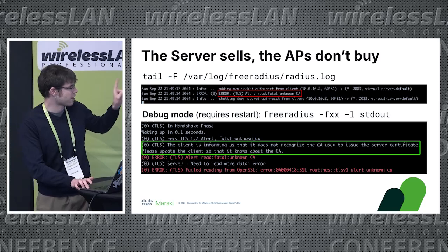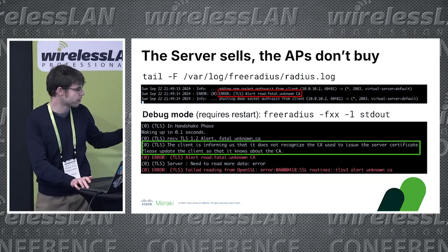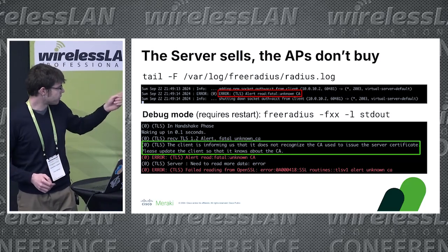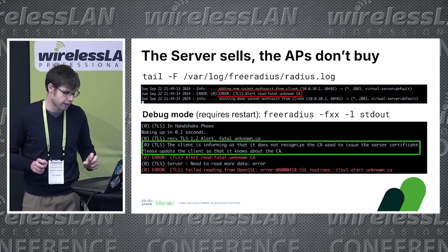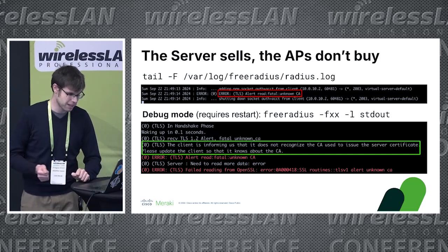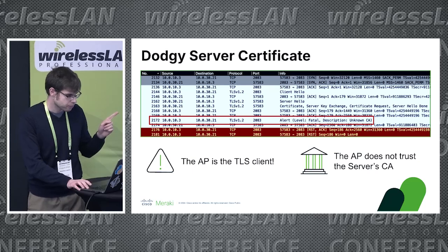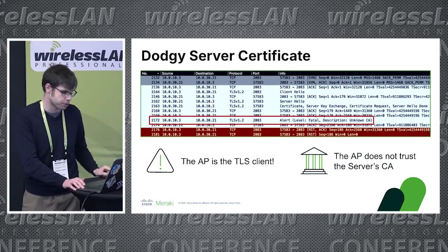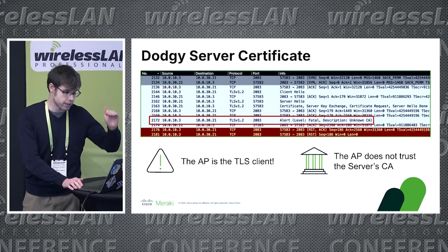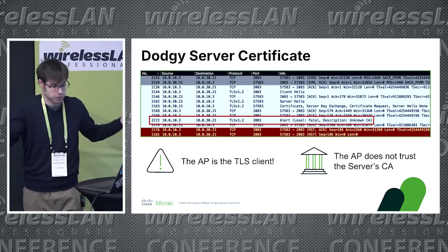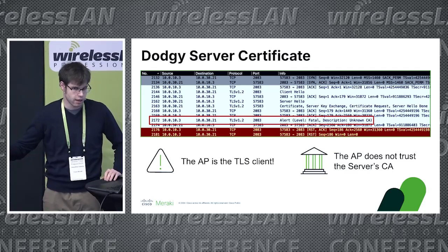Here — this is in a lab — I used a FreeRADIUS server configured for RadSec; however, the same principle applies to other vendors like Cisco ISE. As you can see, it complains that a TLS client — the access point itself, which acts as a TLS client — cannot recognize the certification authorities provided on the server certificate. If we take another Ethernet port packet capture, we see that the RADIUS server sends its server hello, and the access point immediately replies with a TLS alert saying it doesn't know the certification authority, and it immediately resets the TCP tunnel.